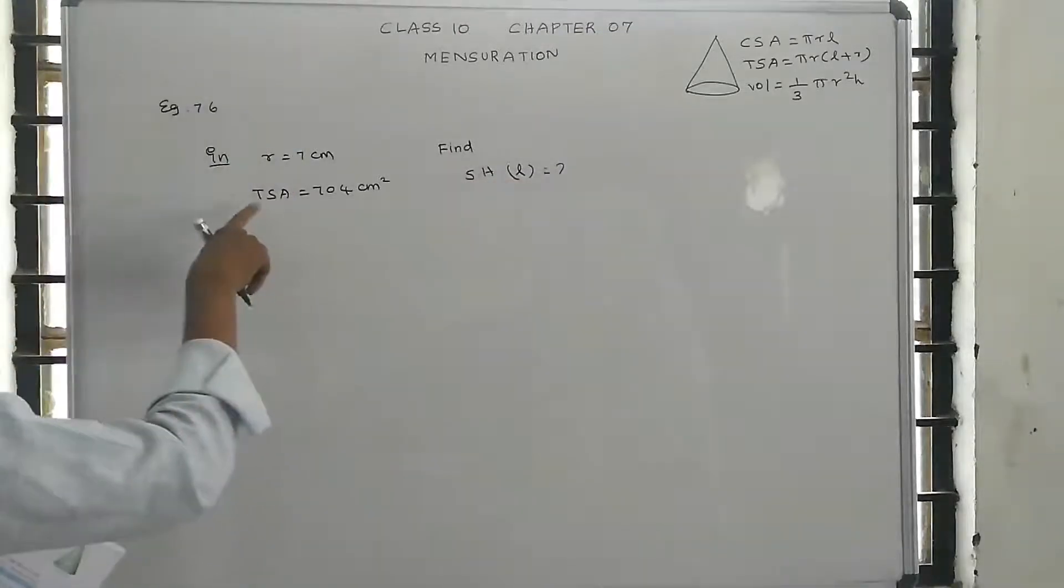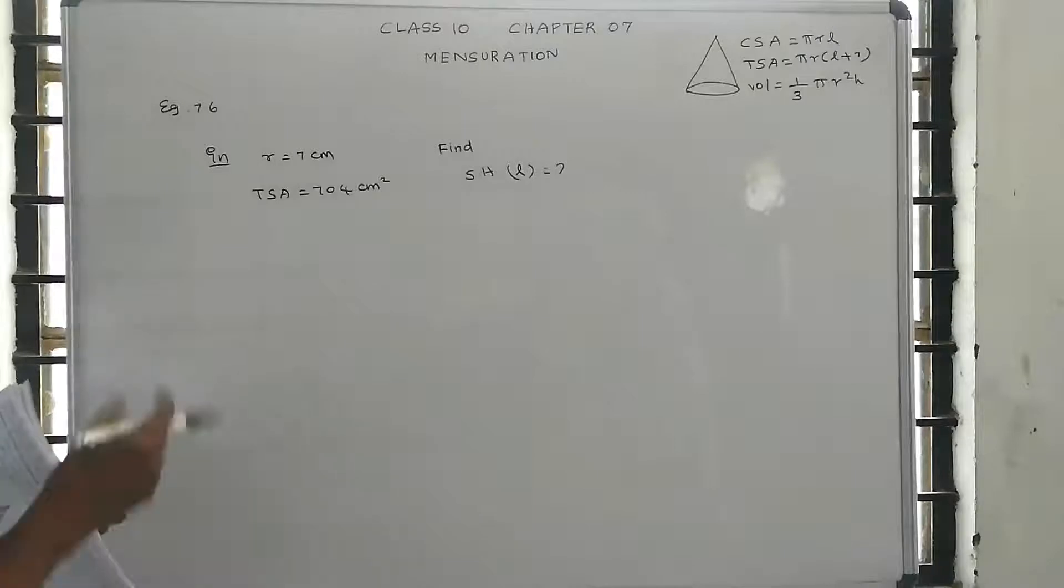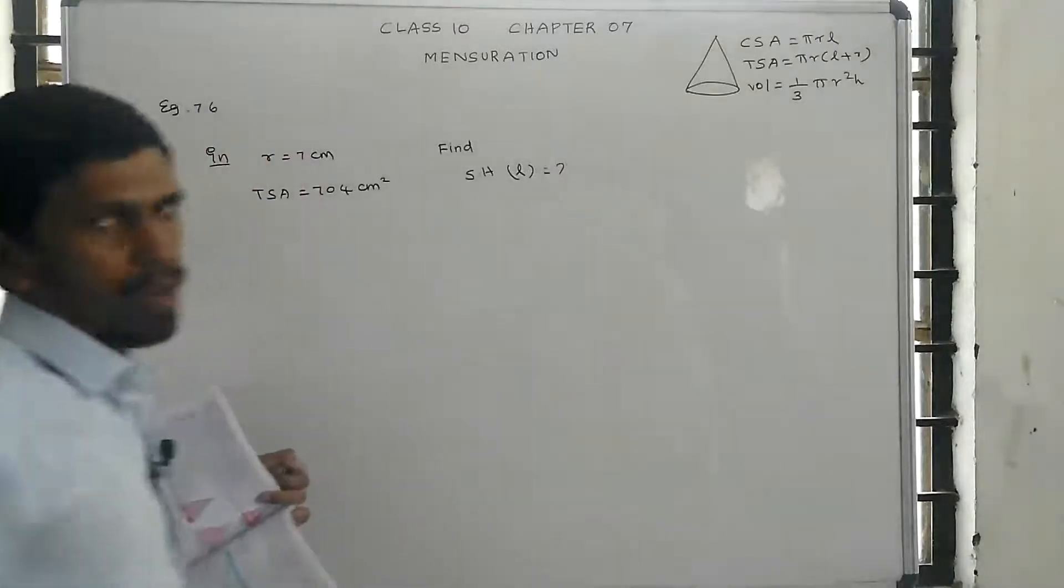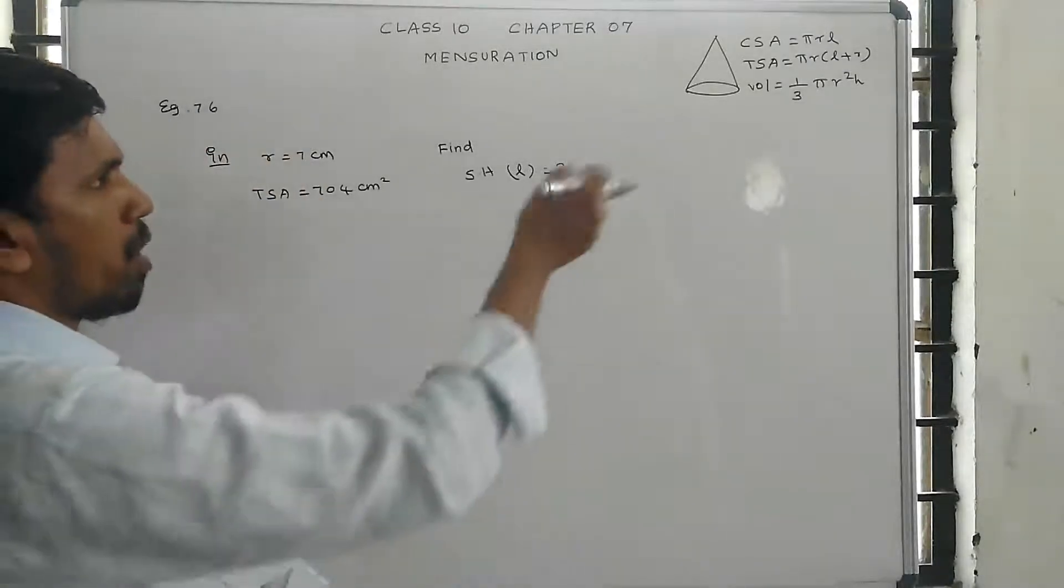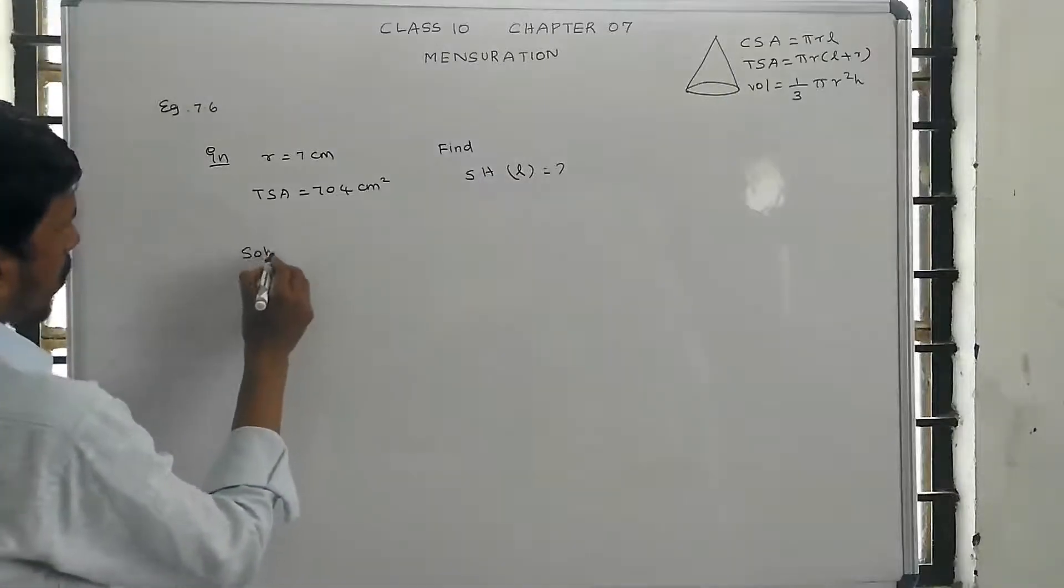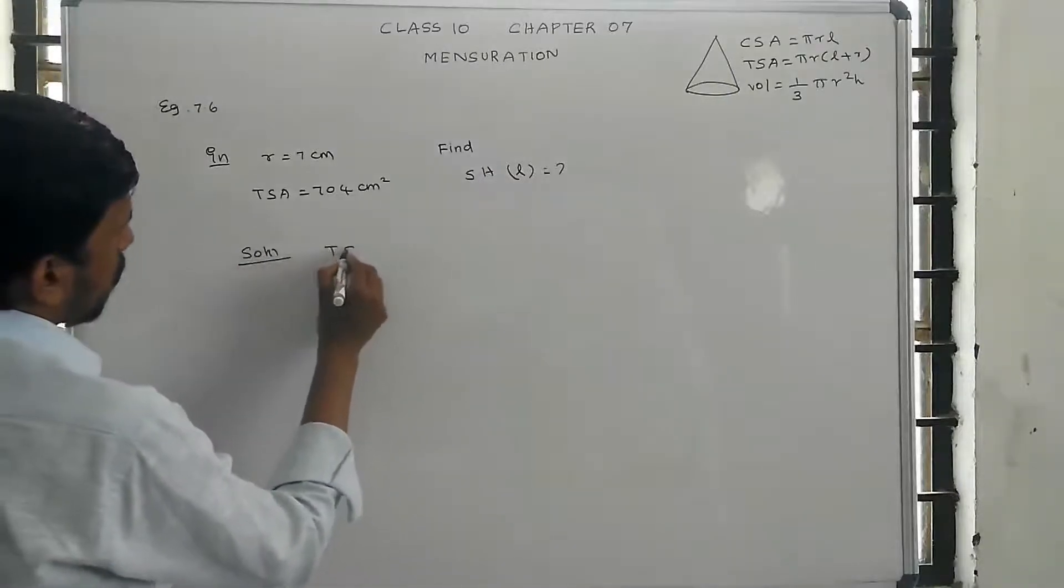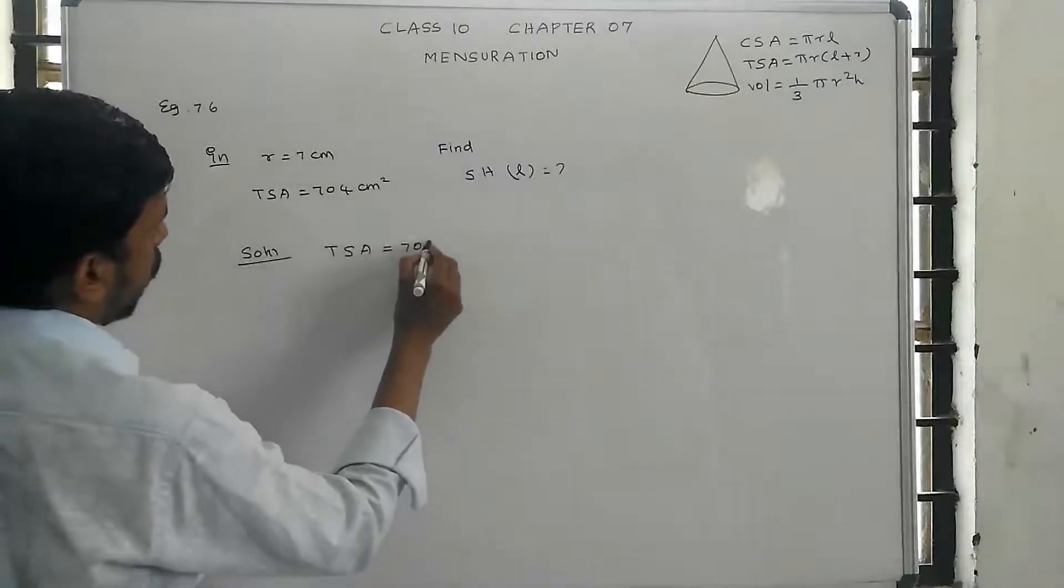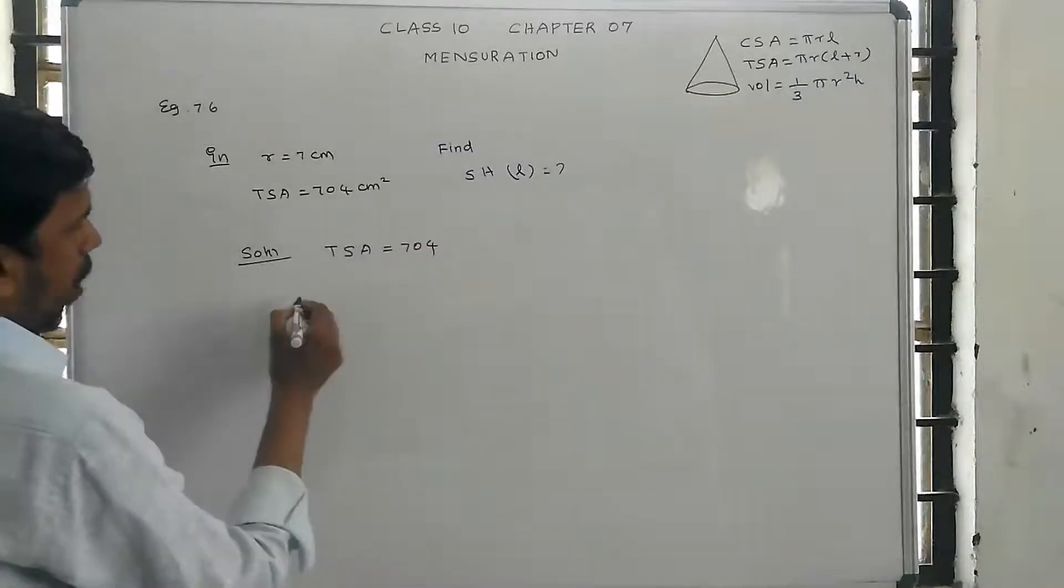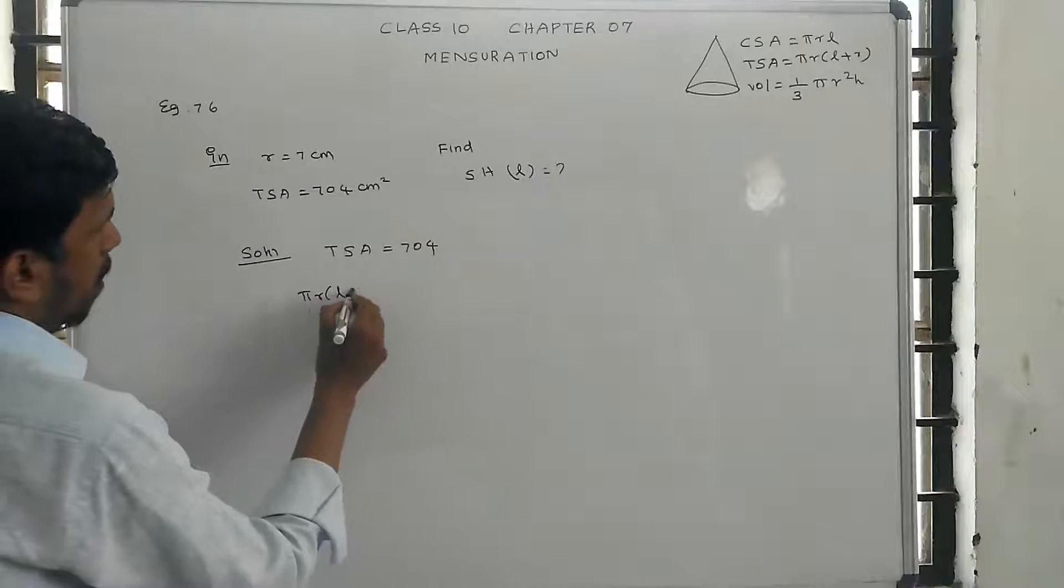If you are given the total surface area, the total surface area formula is πr into (l plus r). So we can find the solution. Total surface area is equal to 704, so total surface area equals πr(l + r) equals 704.